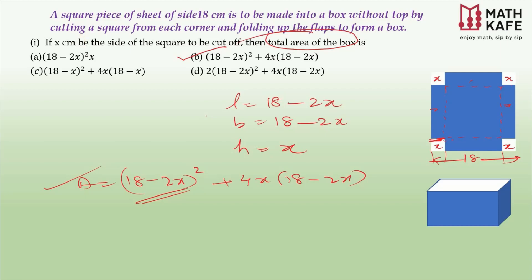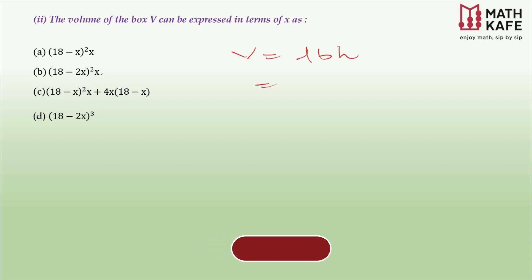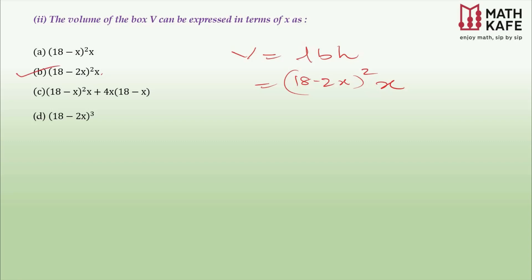The second question asks for the volume of the box, which is one of the easier parts. Volume equals length times breadth times height. From the previous answer, this is (18 − 2x) × (18 − 2x) × x, which we write as (18 − 2x)² × x. If you've written the first steps clearly, the second answer follows easily.